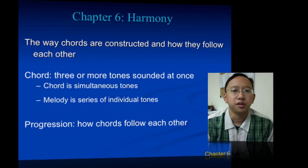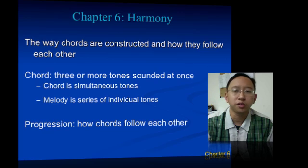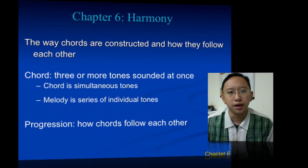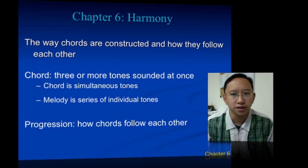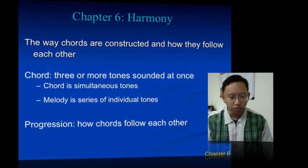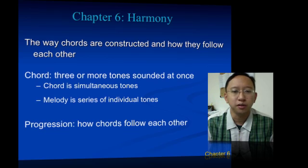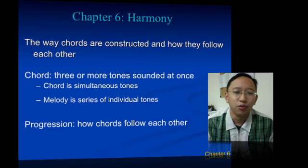The next aspect of music I want to talk about is harmony. Chapter 6 covers harmony. Harmony is the way that chords are constructed and how they follow each other. We talked about melody as one note traveling from one to the next. But when notes are happening simultaneously — when we have three or more tones sounded at once — we call that a chord, whereas a melody is a series of individual notes.